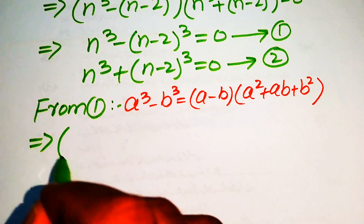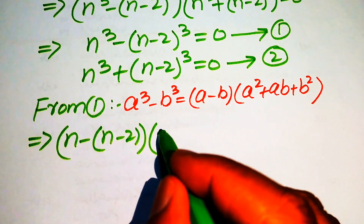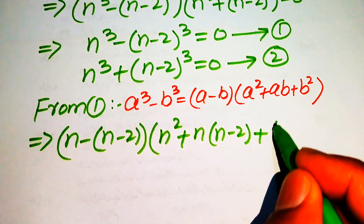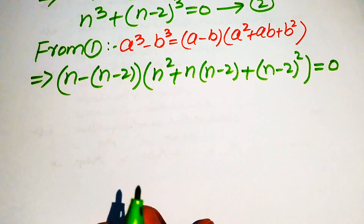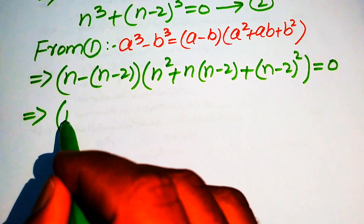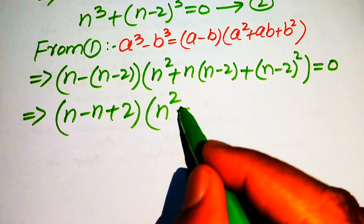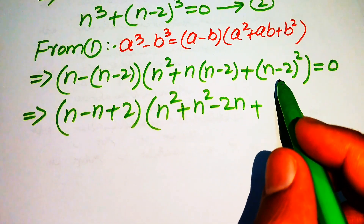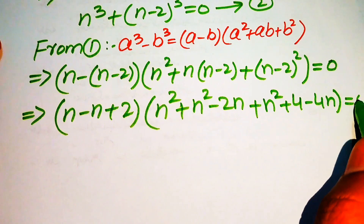Equation number 1 is written as n minus n minus 2, times n squared plus ab where a is n and b is n minus 2, plus b squared where b is n minus 2 squared, equals to 0. We multiply the minus sign through to get n minus n plus 2. We then expand: n squared plus n times n minus 2 gives n squared minus 2n, and n minus 2 squared opens to n squared plus 4 minus 4n, all equals to 0.